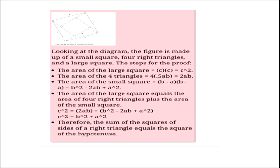The area of the large square is C². The area of four triangles is 4 × (1/2)AB = 2AB. The area of the small square is (B−A)². The area of the large square equals the area of four right triangles plus the area of the small square, so C² = 2AB + (B² − 2AB + A²).